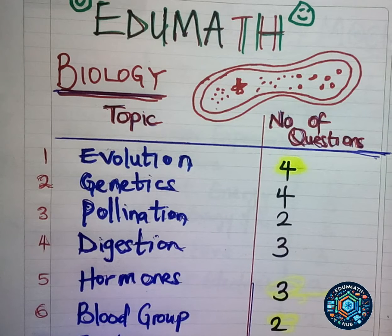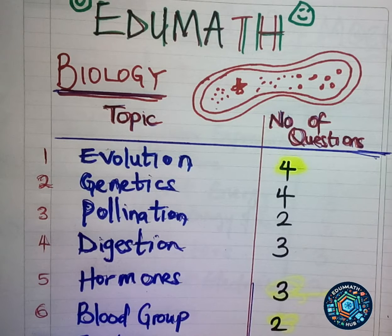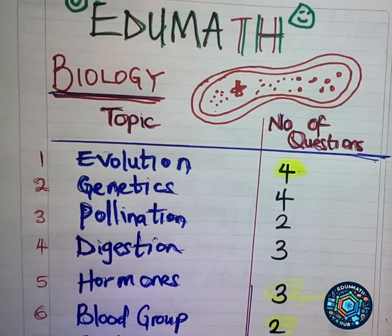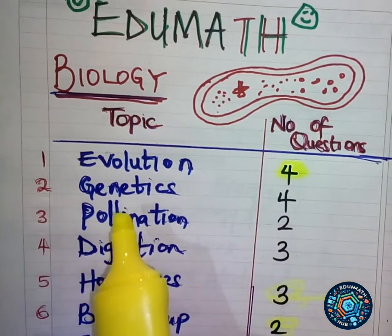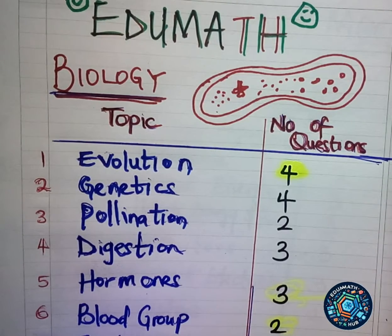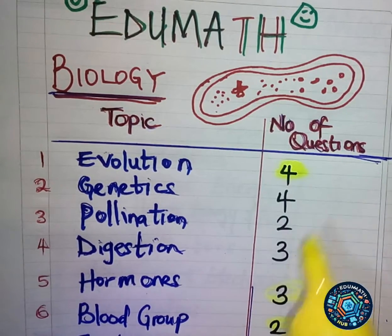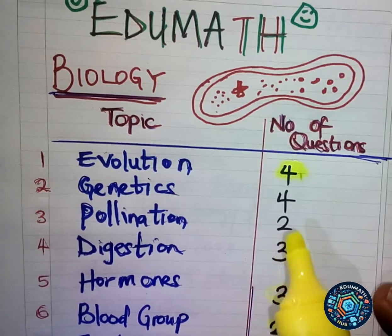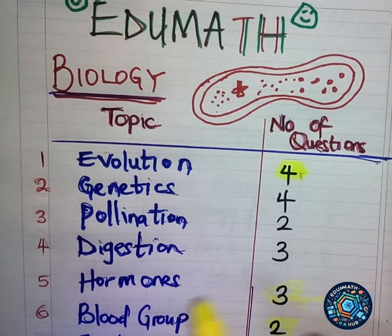Welcome back. This is the breakdown for biology. On the left-hand side you can see the topics, and on the right-hand side the number of questions. The first topic is evolution — four questions came out from evolution in the JAMB mock exam this year, so you need to master this topic very well: theories of evolution, Lamarck's theory, Darwin's theory, all those things.